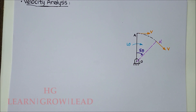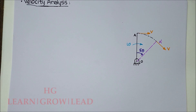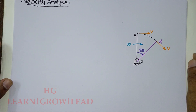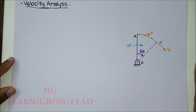The instantaneous center method is Module 1 and the relative velocity method is Module 2. In this lecture I will discuss the relative velocity method, which is the second module, first topic. We will now go to the method and solve the problem.